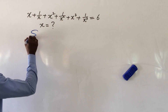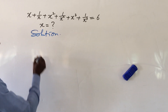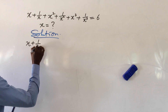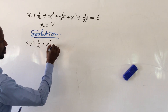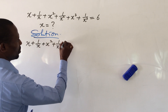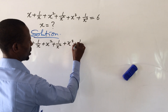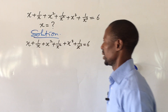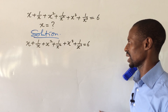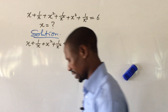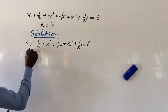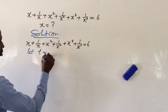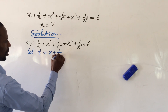So we take down our question. The question says: x + 1/x + x² + 1/x² + x³ + 1/x³ = 6. If we look at this carefully, what we do here is to bring in another variable. So let's say t is equal to x + 1/x.